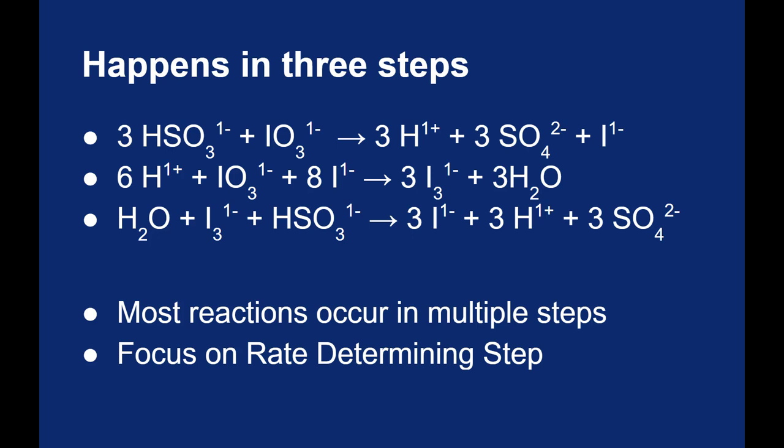The rate determining step is the slowest step in the process. Whenever you have a reaction occurring, there's going to be some kind of bottleneck that slows up the whole process. It might be the first step, it could be the second step, it could be the third step. It doesn't necessarily matter where it happens in the order, but whatever your slow step is, that will be your rate determining step.